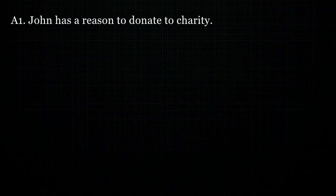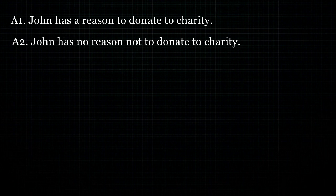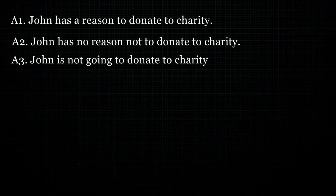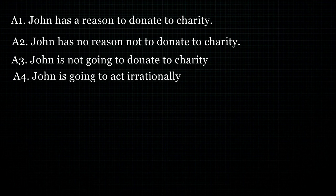Let's unravel this with concrete examples. A1: John has a reason to donate to charity. A2: John has no reason not to donate to charity. So here John has both a reason to give to charity — the action is aligned with his interests — and he has no reason not to donate. But then A3: John is not going to donate to charity. So John would be acting against his interests, and so they conclude A4: John is going to act irrationally. If we take John as rational, we end up with a contradiction.